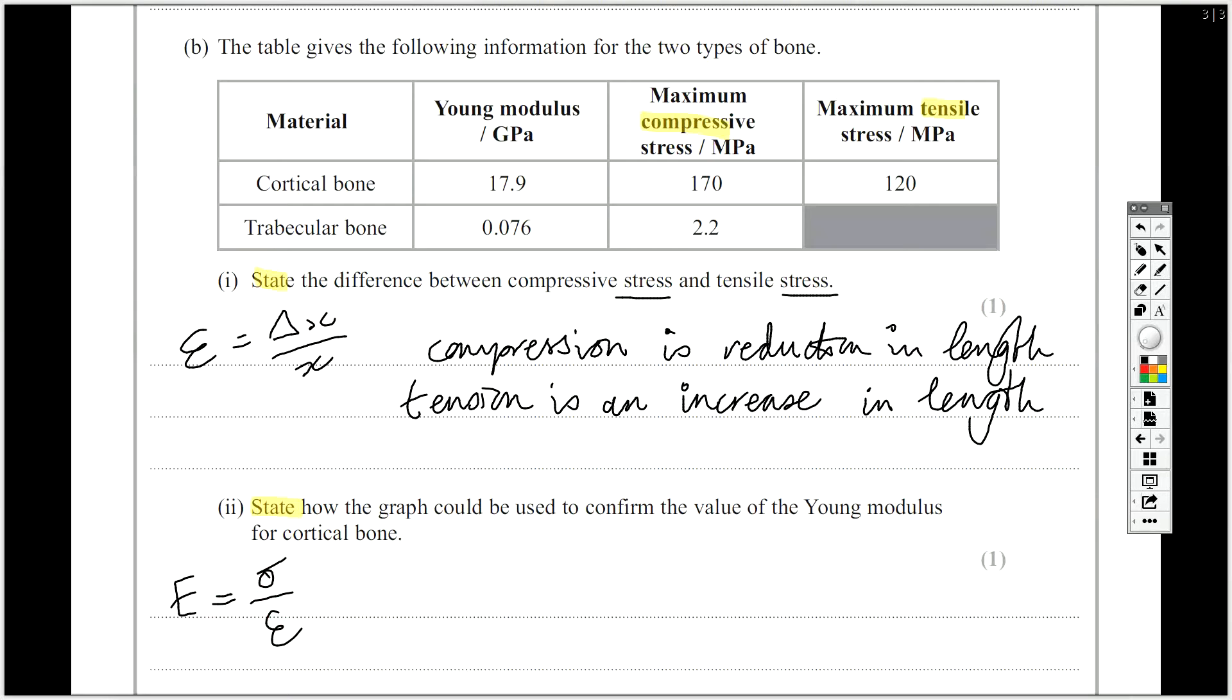Young modulus was stress over strain. And actually, that is the y-axis. And that is the x-axis. So what is this then? dy by dx. Young modulus is the gradient of the graph. And it's only of the proportional section of the graph.